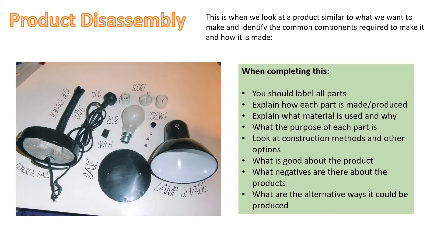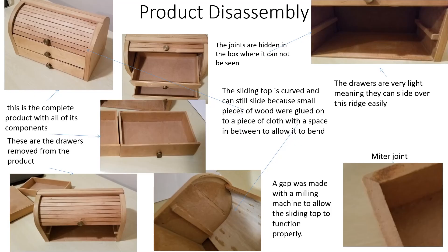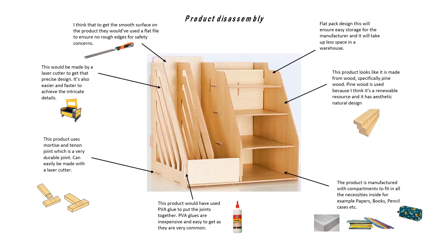You have three examples of how product disassembly can be achieved. One: you physically disassemble a product. Two: you open the product, take pictures from different angles, and explain how each part is made. Three: you copy and paste an image. The key focus is types of materials, joints, and manufacturing methods such as laser cutter, vacuum forming, and hand tools — basically identifying how you could make this product if you were making it in a workshop.